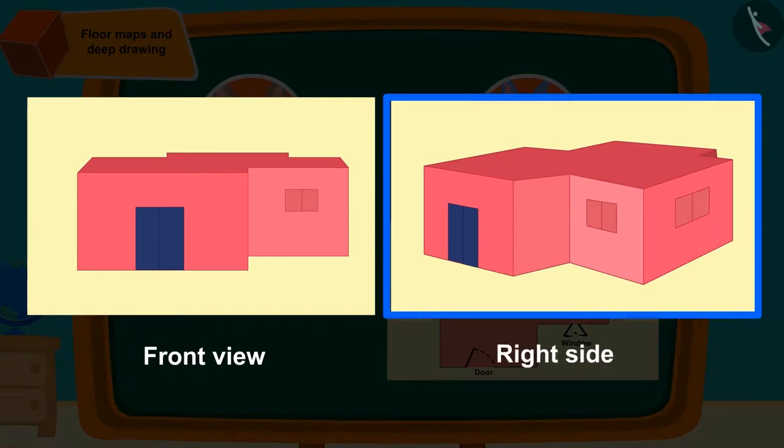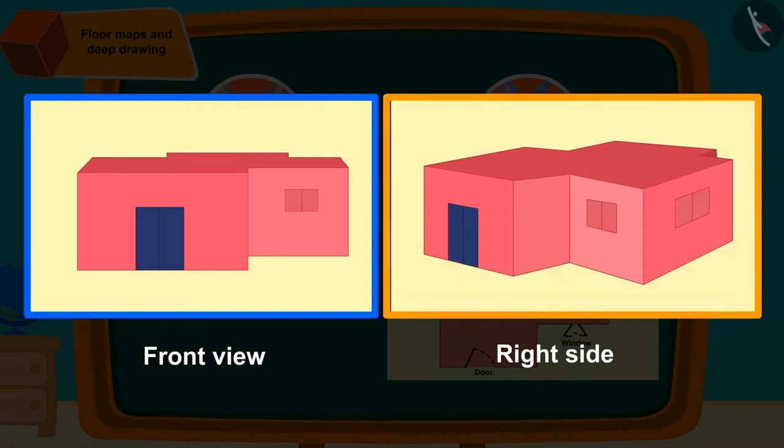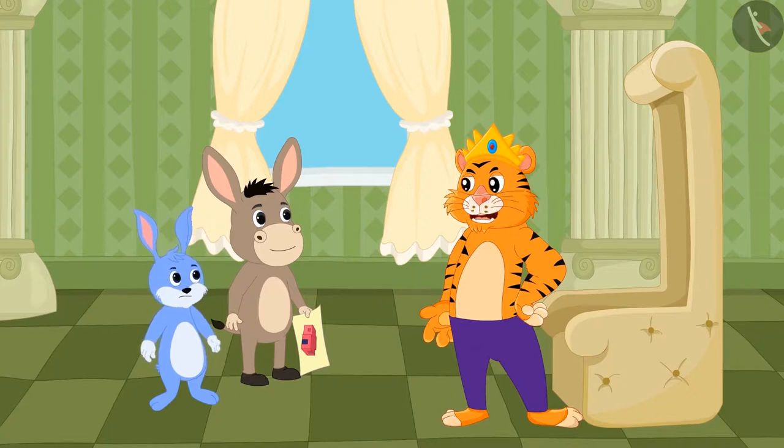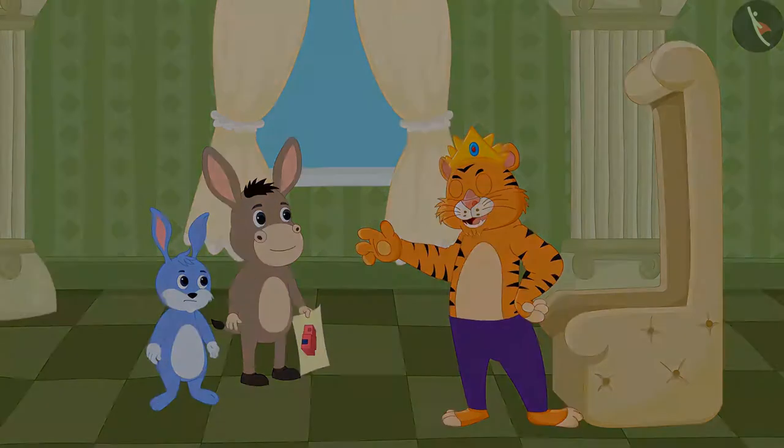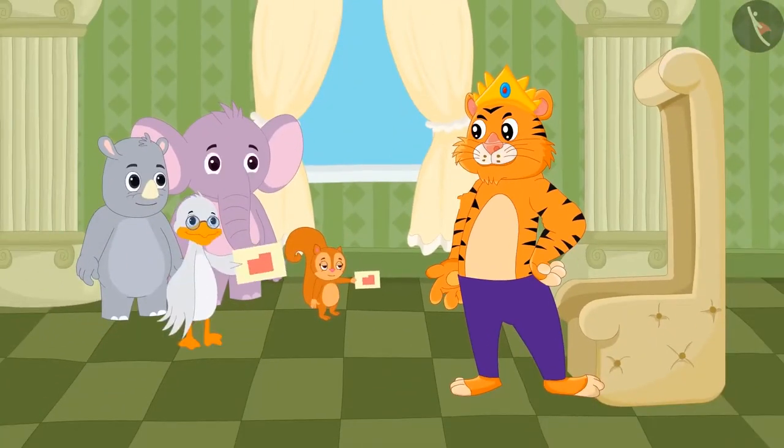We can see any three-dimensional objects from different views. We will learn about it in the next video. The king liked the design made by Bholla, but he wanted to see some more designs by different people. The next day, Chanda and Babble Uncle Duck reached the king's court with their floor map and deep drawings.